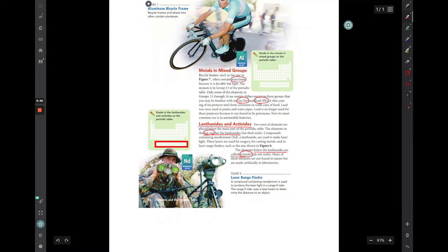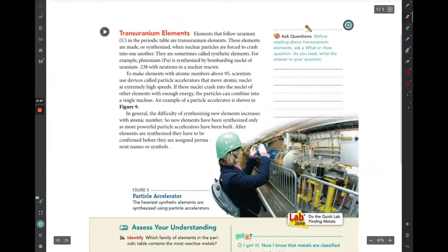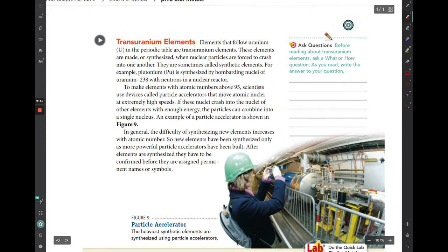And then lastly, I just want to mention that there are some elements on the periodic table that are not really naturally occurring. The elements that follow uranium on the periodic table, which I believe is number 92, these elements are all made or synthesized. Synthesized means to be made man-made when nuclear particles are forced to crash into one another. So anything that comes after uranium number 92 on the periodic table don't exist in nature. They have to be synthesized or made by scientists by bombarding them with these nuclear particles and causing there to be a change in their electron number.